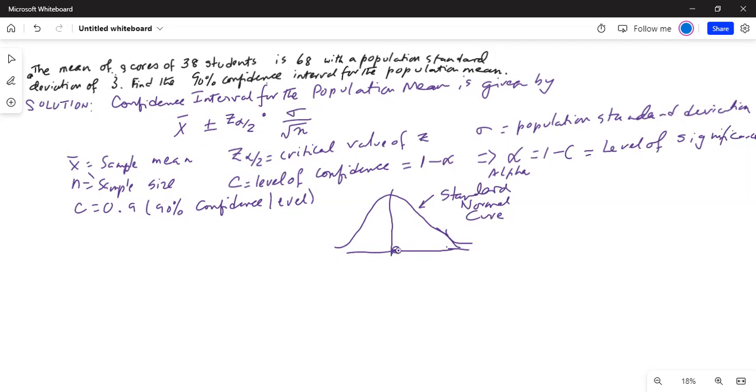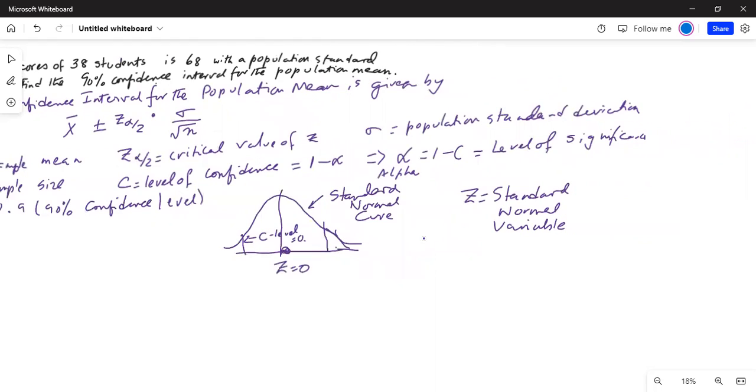At the center, at the peak is the highest, z is equal to 0. z is your standard normal variable. Now, c-level is the area in the center. This is your c-level and this is equal to 0.9 in this problem. The area in the center is 0.9.